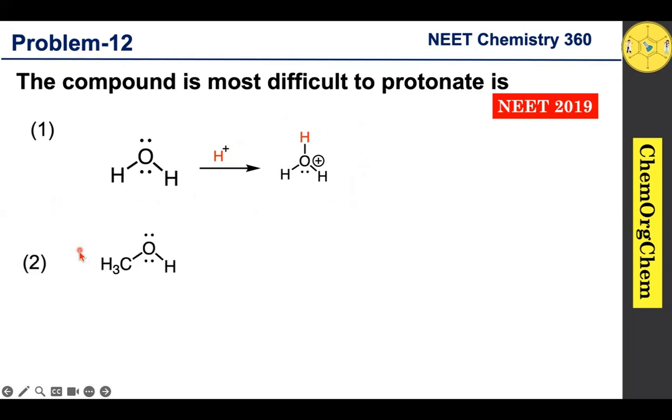Let's move to our second option, which is methanol. Methanol oxygen has two lone pairs of electrons along with one methyl group. Here methyl group acts as an electron releasing group based on +I effect. Therefore availability of lone pair of electron is higher, which readily undergoes protonation reaction to produce the corresponding protonated methanol.